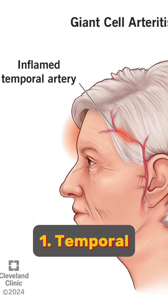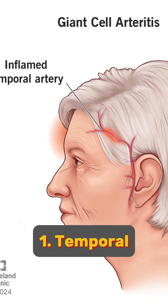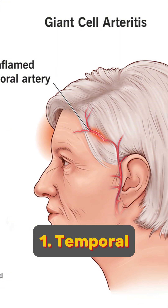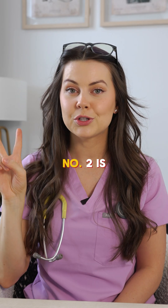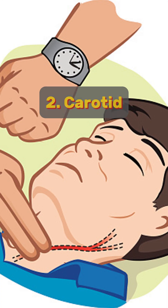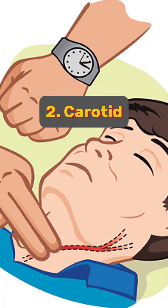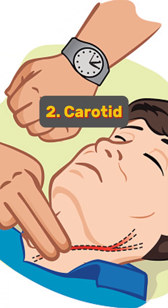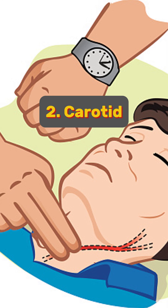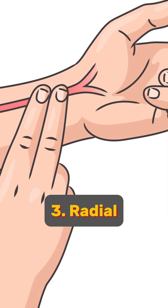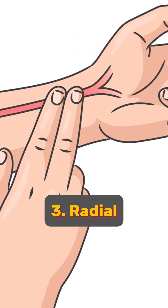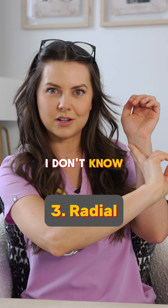Number one is your temporal, which can be found at the side of the head. Number two is carotid, found at the side of your neck. Number three is radial, located just above the thumb.